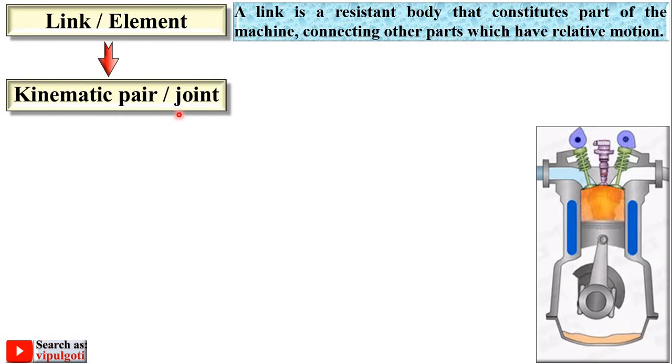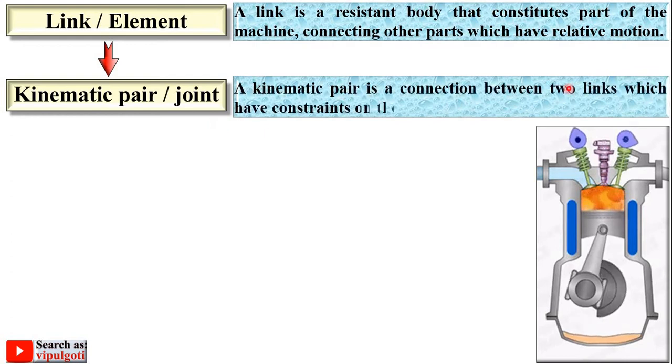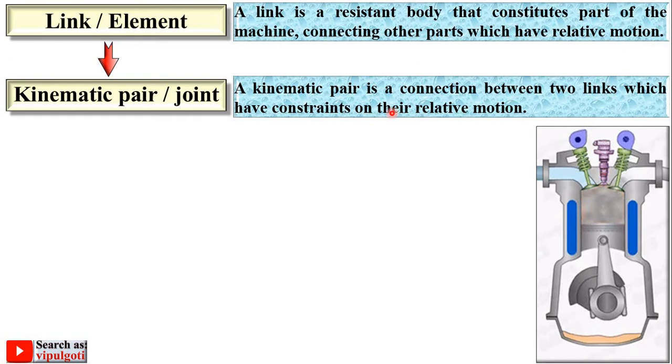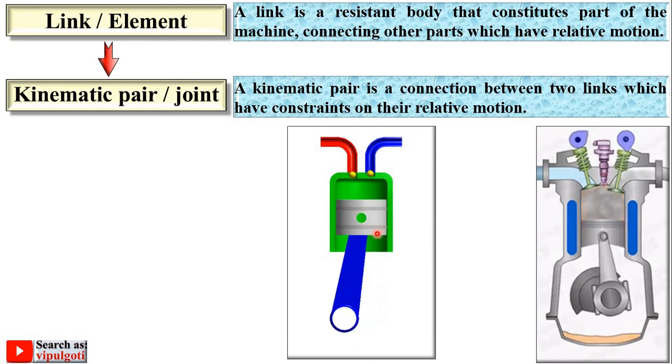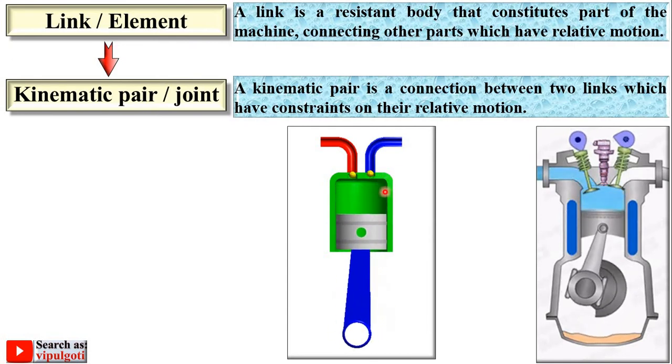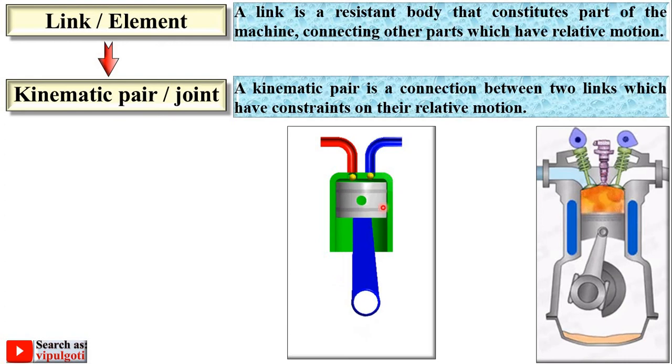Kinematic pair, or sometimes called kinematic joint. A kinematic pair is a connection between two links which have constraints on their relative motion. Here you can see the piston and cylinder make a pair, having relative motion between them. Here's one more figure - this one is the piston and this green color is the cylinder, having relative motion, so it makes a kinematic pair.